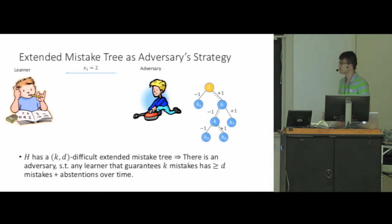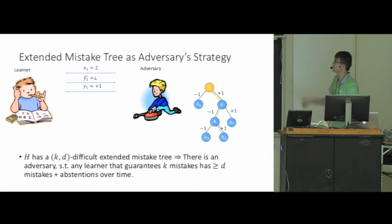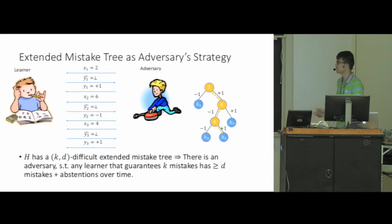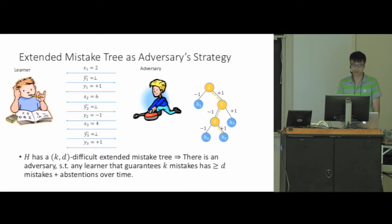For example, suppose the adversary wants to fool a learner that guarantees zero mistakes. The adversary shows the example at the root. Since the learner must make zero mistakes, the only option is to output 'don't know'. The adversary follows the right dashed edge and reveals a label of plus one. This goes on until a leaf is reached. The adversary can force the learner to make three abstentions. In general, if the hypothesis class has a kd-difficult extended mistake tree, then any learner guaranteeing at most k mistakes will have at least d total mistakes plus abstentions.